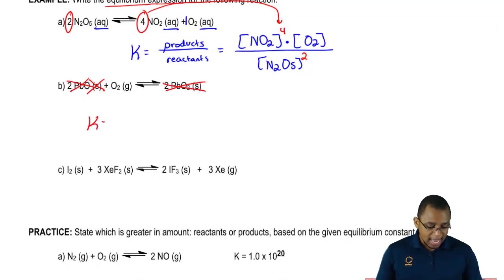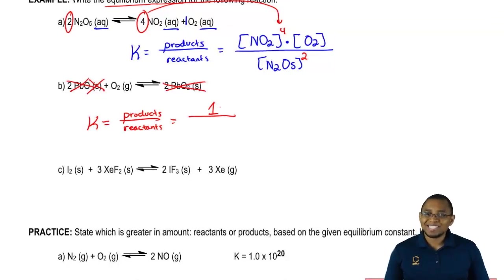Here we're going to say K equals products over reactants like before, but here's the thing. We're going to say we don't have any products available, but you have to put something on top. We're going to say it's equal to 1. Solids and liquids are ignored and in place of them, we're going to put 1.